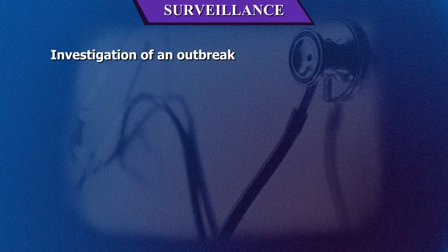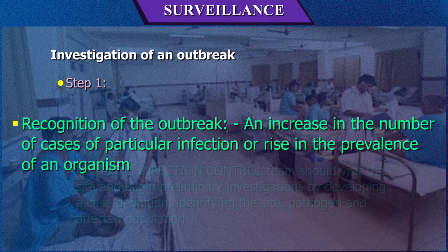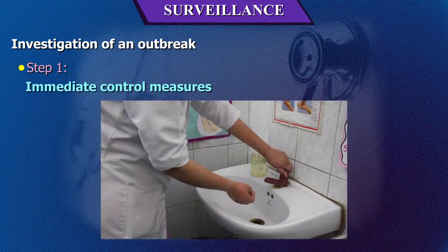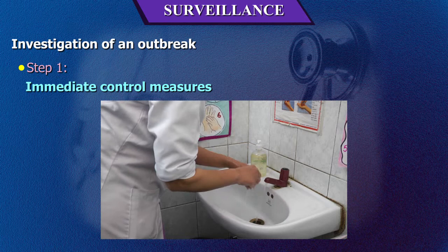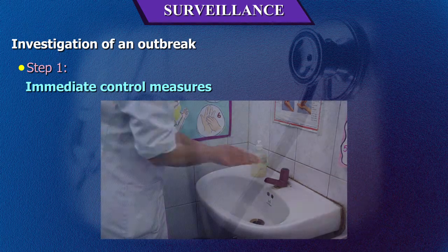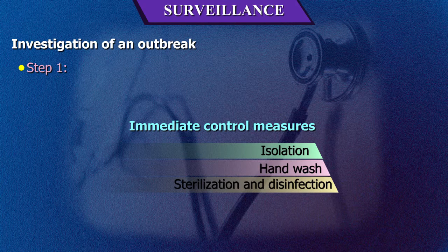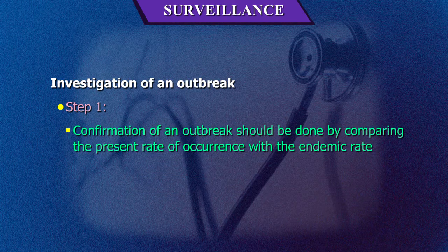Investigation of an outbreak — Step 1: Recognition. Is there an increase in the number of cases of a particular infection or a rise in prevalence of an organism? The hospital infection control team should visit the site, begin preliminary investigations by developing a case definition, identifying the site, pathogen, and affected population. Immediate control measures are required: isolation of infected cases, strict hand washing, strengthening of sterilization, disinfection, and asepsis. Confirmation of an outbreak should be done by comparing the present rate of occurrence with the endemic rate.